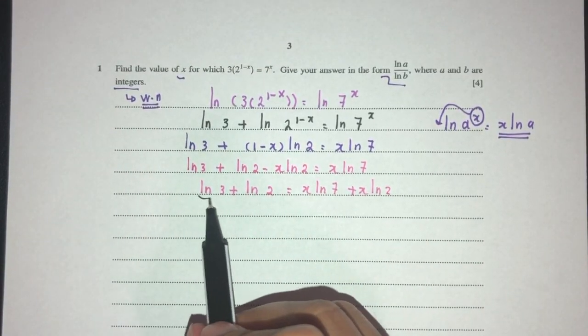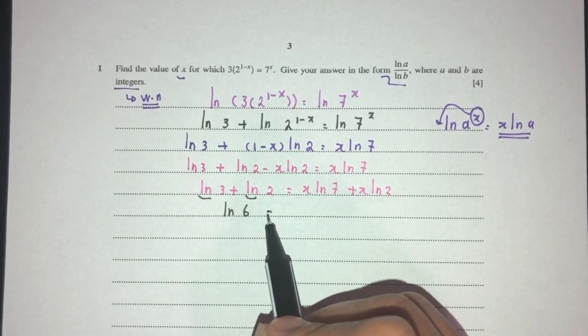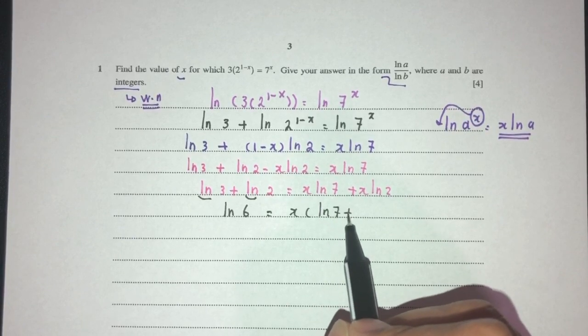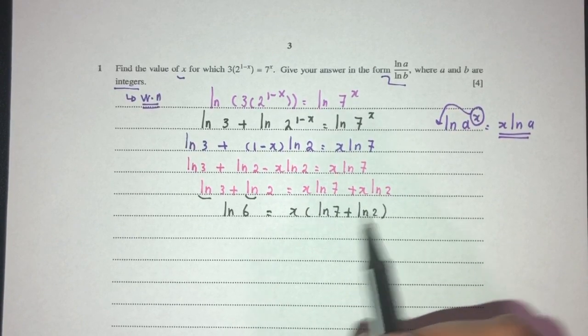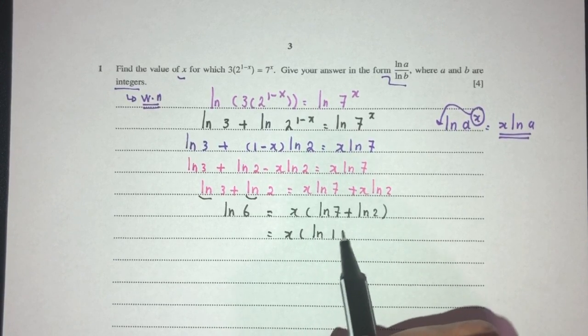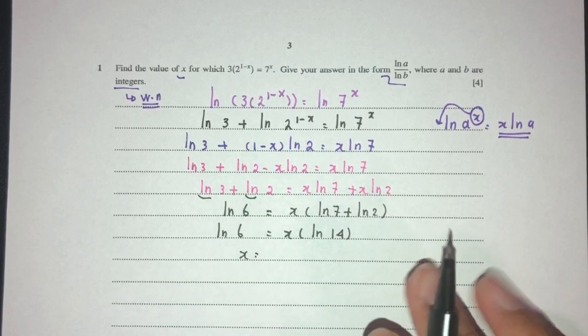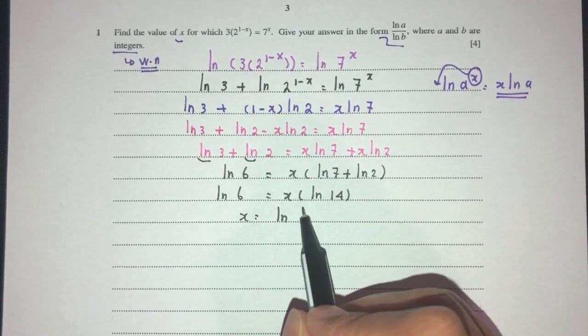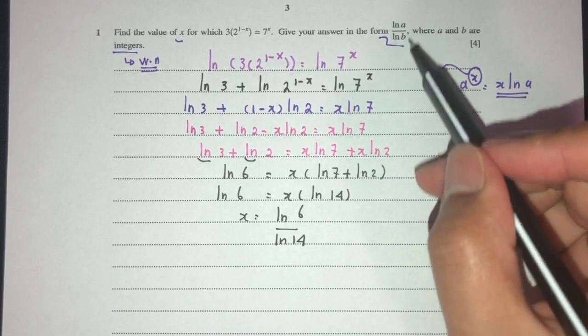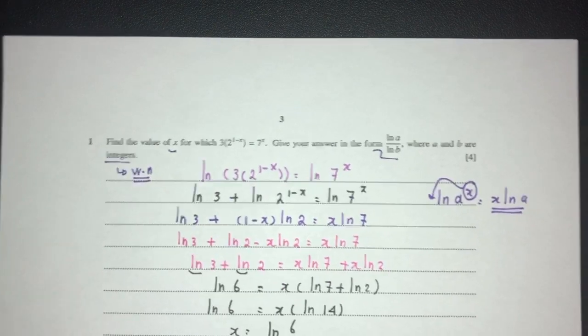Because these two are the same, can combine them together. You will have ln of 3 times 2 will be 6. Here we can factorize. That should be x and ln of 7 plus ln of 2. Similarly, this is also the same. Can combine them, it should be ln 14. Finally, x becomes subject. That should be ln 6 over ln 14. The value of a and b is 6 and 14, they are integers. And this is your question number 1.